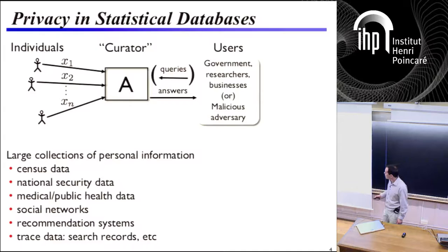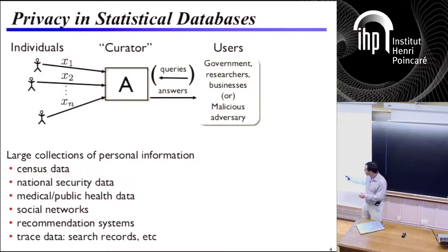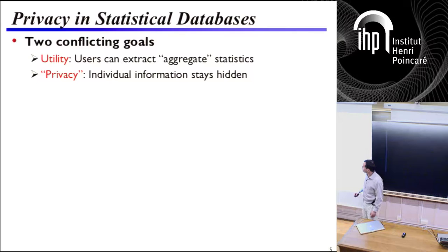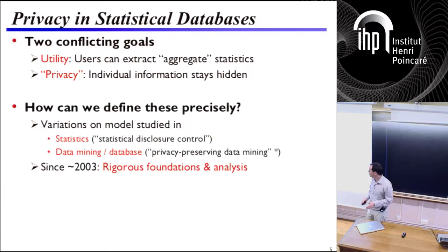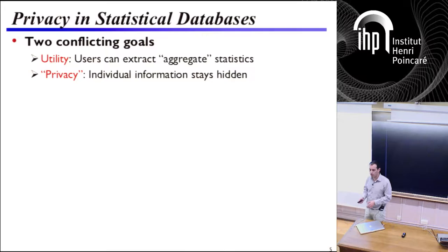In these types of settings, on one hand you're trying to make as much information available as possible. On the other hand, if the information itself, at the individual level, is sensitive, then you can't just broadcast the data. So we've got this basic tension between utility — users on the outside want to be able to extract as much information as they can — and on the other hand, the goal of some kind of privacy restriction, that we want individual-level information to stay hidden. This is the fundamental tension we're going to be tussling with all morning.